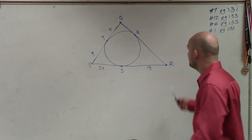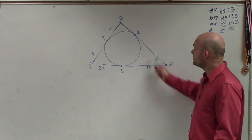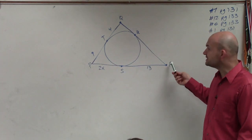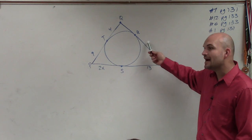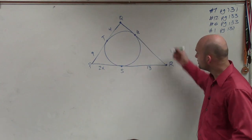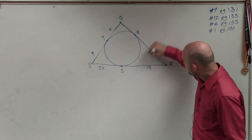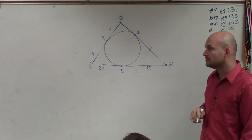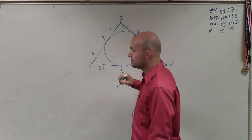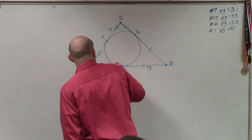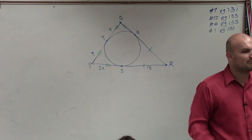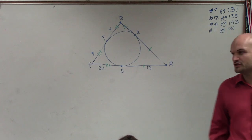So what I notice here is I have a couple of points outside of a circle, and from each one of those points it looks like I have tangent lines. Now remember, if I have tangent lines, that means those two sides are equal — these two lines are equal, and these two lines are equal. Now it asks us to find the perimeter of the triangle.